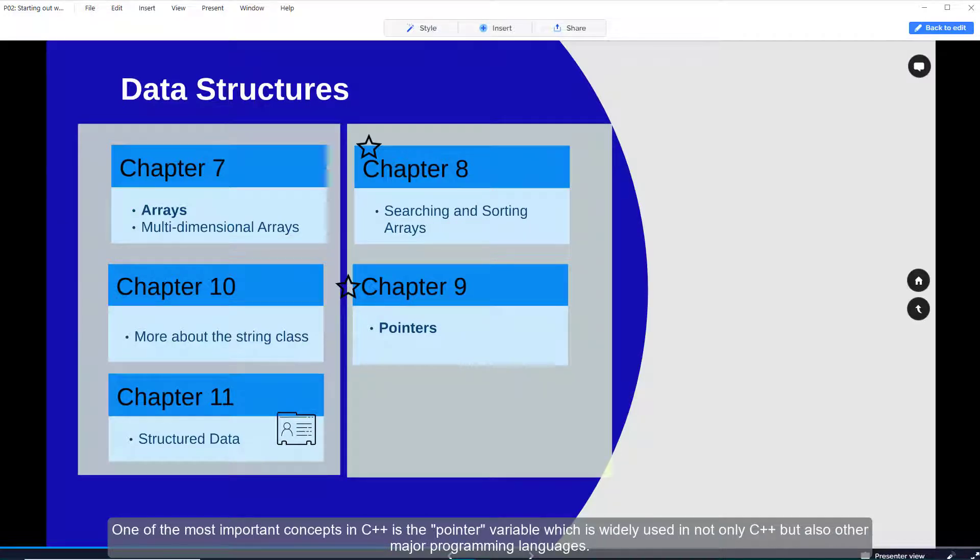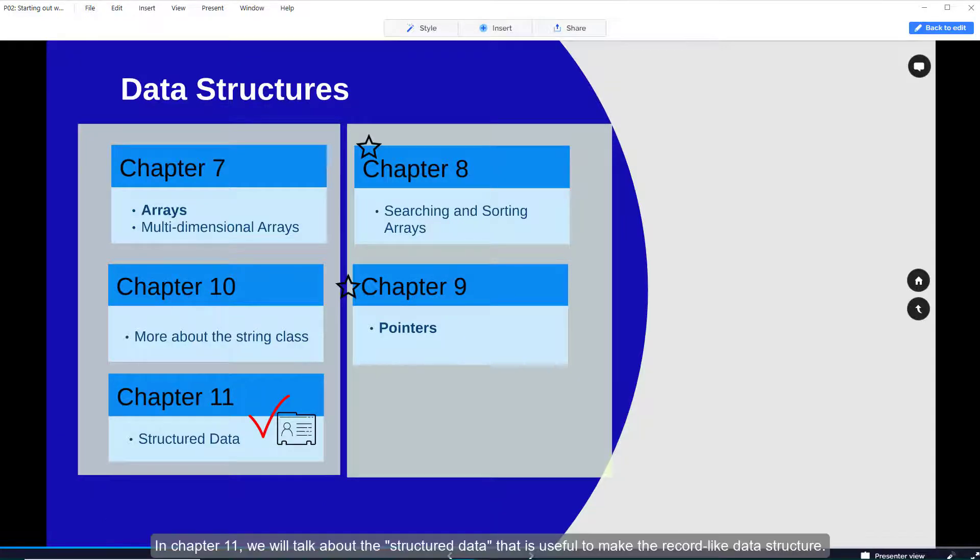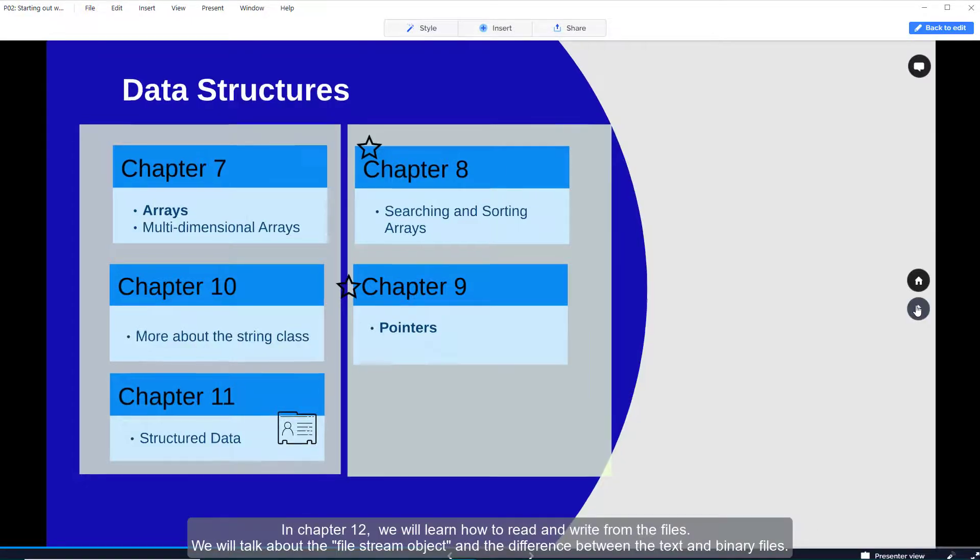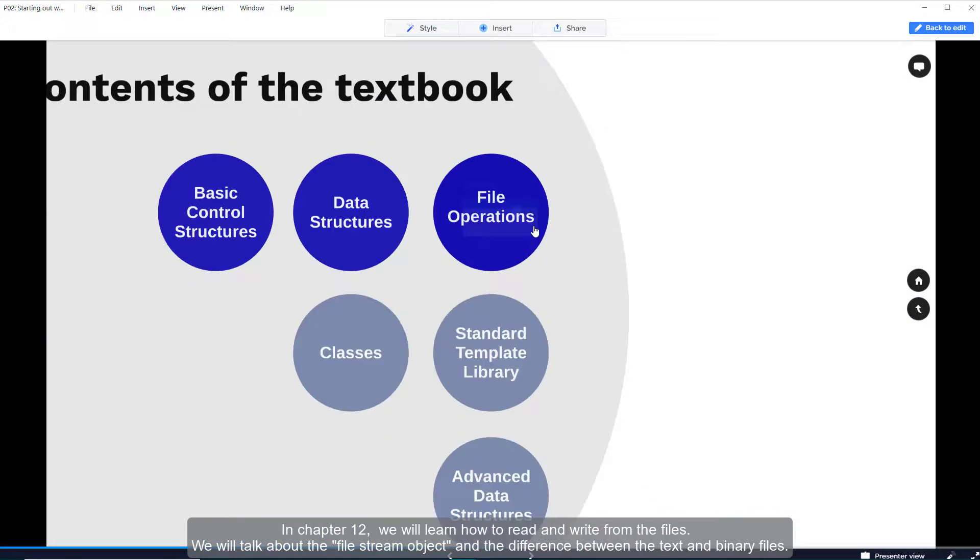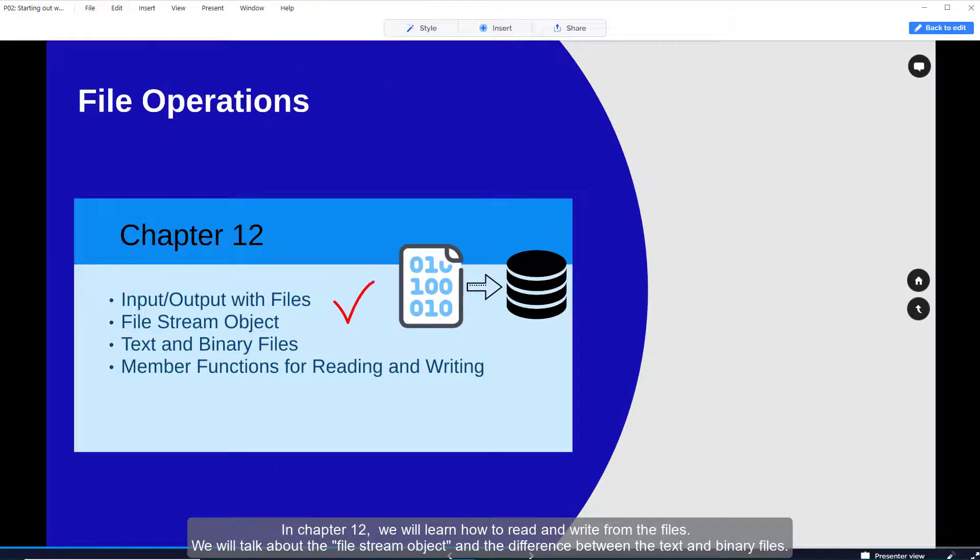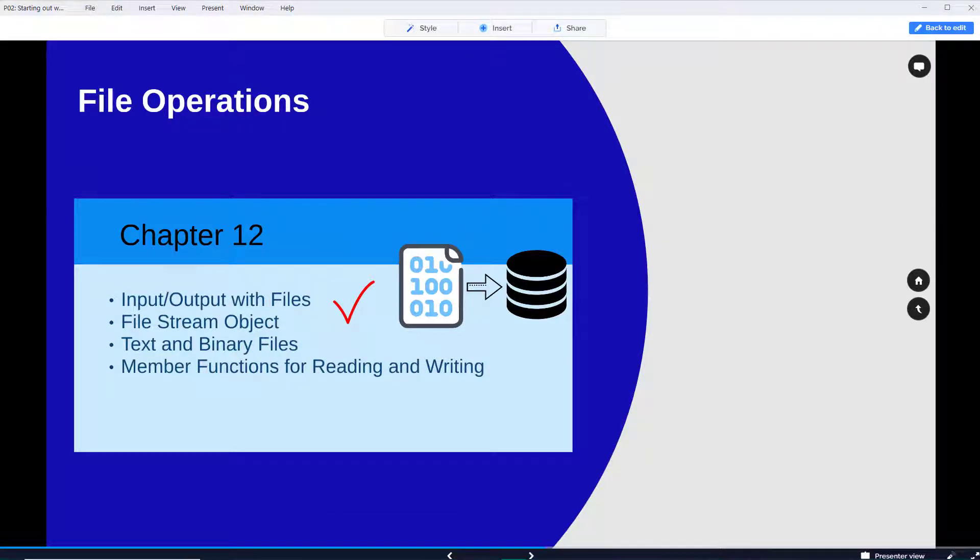One of the most important concepts in C++ is the pointer variable which is widely used in not only C++ but also other major programming languages. In chapter 11 we will talk about the structured data that is useful to make record-like data structures. In chapter 12 we will learn how to read and write from files. We will talk about the file stream object and the difference between text and binary files.